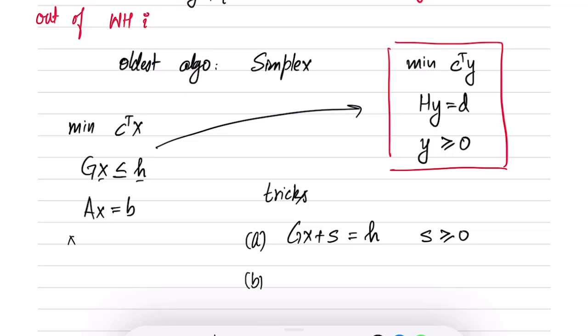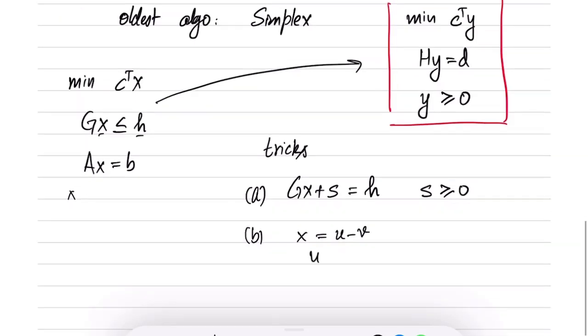In general any number can be expressed as difference of two positive numbers. This choice is not unique by the way, this choice of u and v is not unique, but this is one of the choices you can make. If you use this choice you will end up with a problem of this form, and given u and v you can always get back the x.